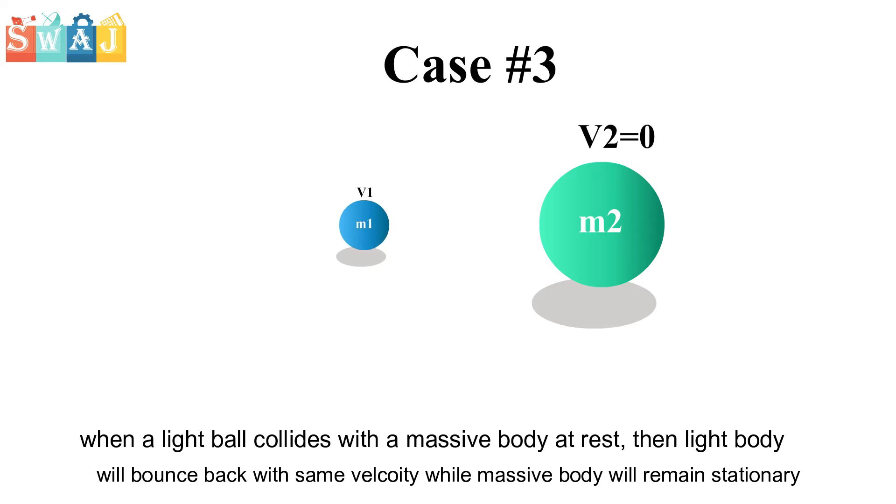Case 3: When a light ball collides with a massive body at rest, then the light ball will bounce back with the same velocity while the massive body will remain stationary.